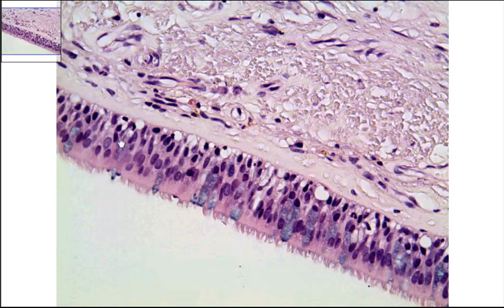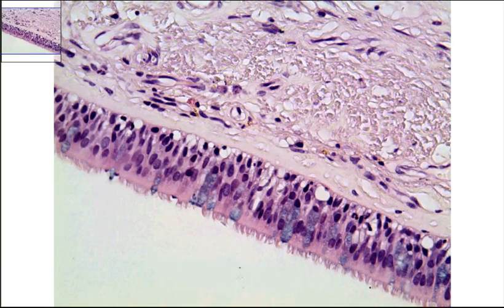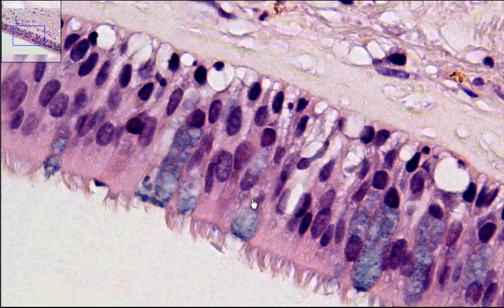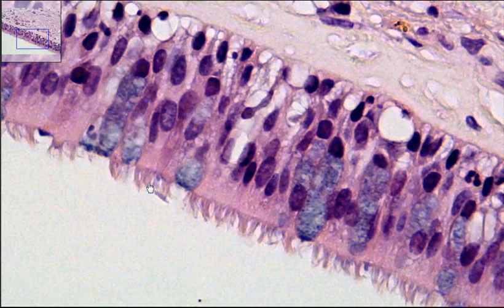Hopefully you can recognize that this layer right here is going to be your ciliated pseudostratified columnar epithelium with goblets. If we zoom in, we can see the individual cilia right here. The cilia are going to be on the apical surface — the surface that's exposed to the inside of the trachea.